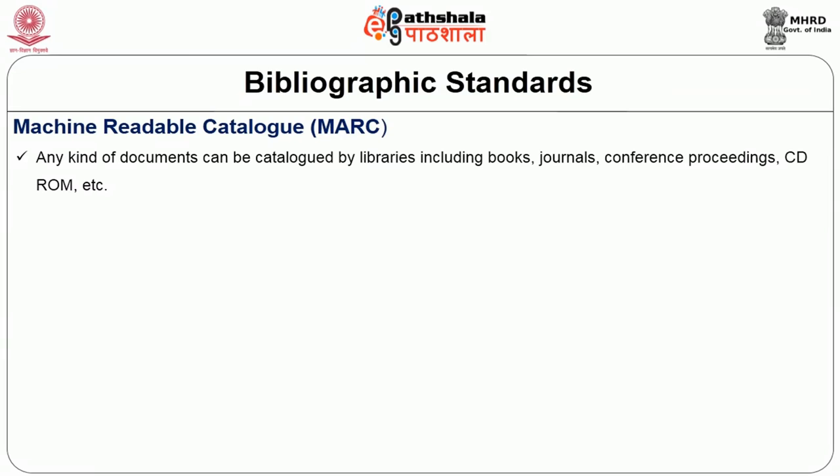Most digital library software supports Dublin Core metadata sets for bibliography. Dublin Core is a very simple 15-field standard — we use it for our project called Shodh Ganga, though we use a modified Dublin Core. The most common, acceptable, and internationally acclaimed standard that India decided to follow is MARC — Machine Readable Catalog. Any kind of document available in a library — books, journals, conference proceedings, CD-ROMs — can be cataloged using MARC.